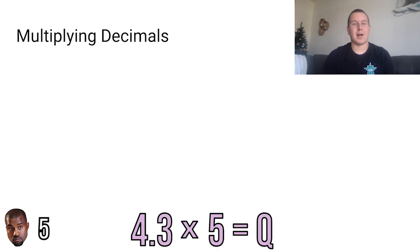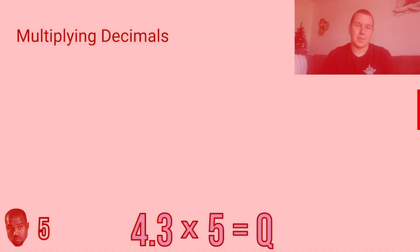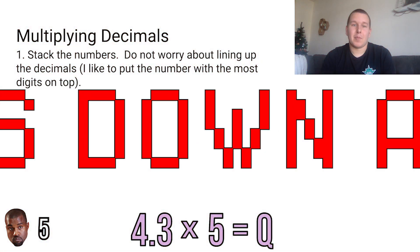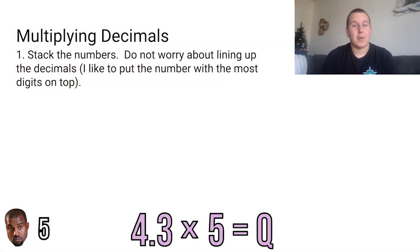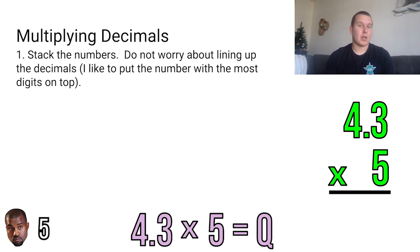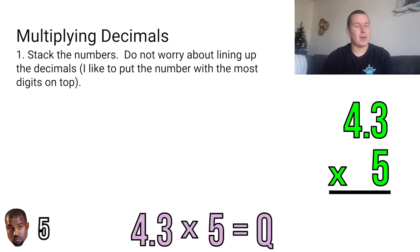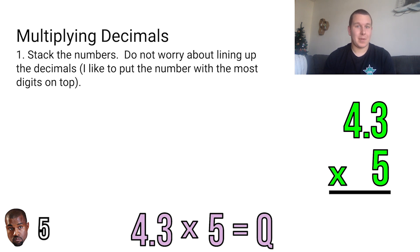So we have an equation here at the bottom. It says 4 and 3 tenths times 5 equals Q. Our first step is we're going to stack the numbers. Do not worry about lining up the decimals. I personally like to put the number with the most digits on the top. So 4 and 3 tenths has the most digits, so we're going to put that at the top, and 5 is going to go at the bottom. This is going to really help us with multiplying later so that we don't have to do more steps. We're going to put the number with the most digits, not necessarily the greatest value.